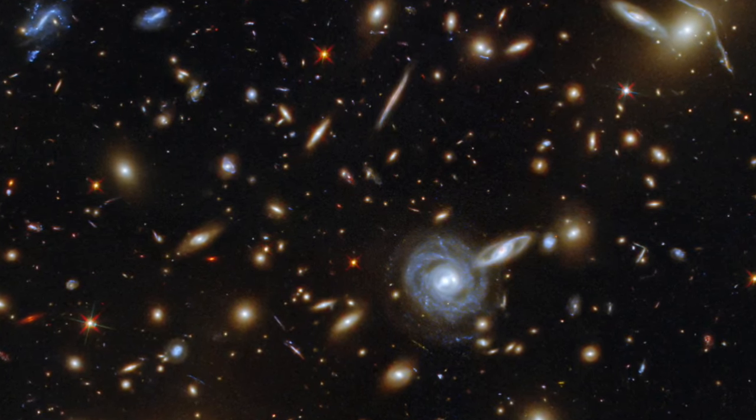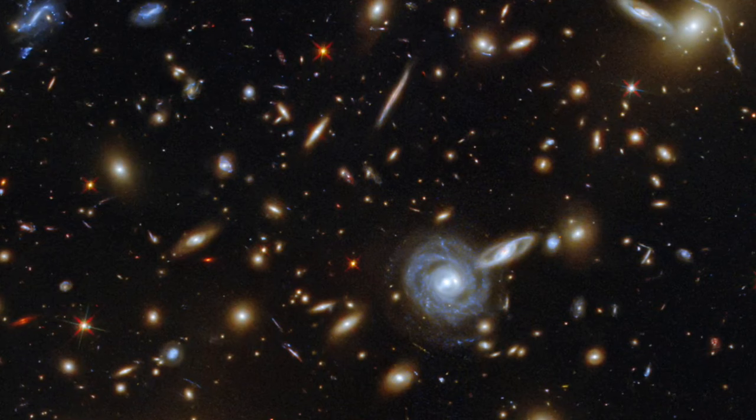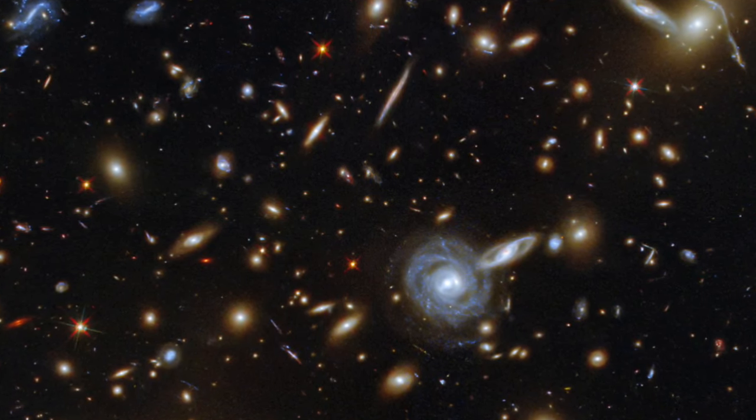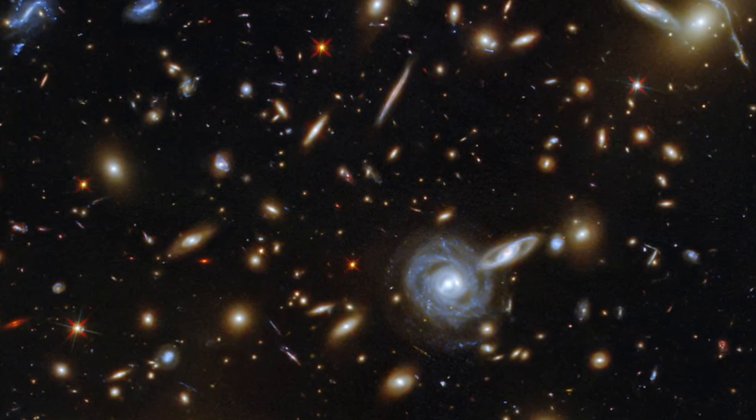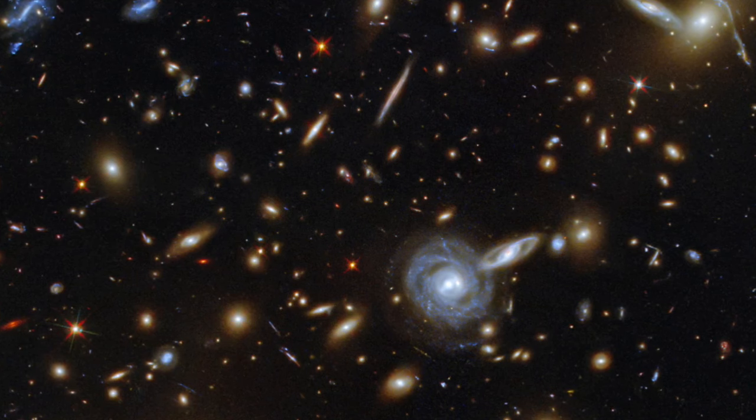Supermassive black holes at the heart of active galaxies have been suggested as one possible source. But then why don't we see any sign of such objects along the direction of travel?